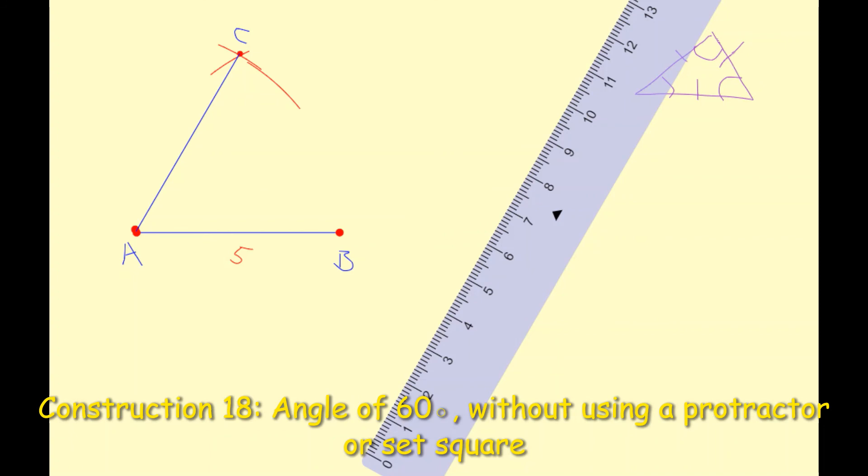This angle, angle A, is now 60 degrees and the reason for it is that I've constructed a line segment of 5 centimeters and 5 centimeters, and if I was to connect the line from B to C it would also be 5 centimeters.